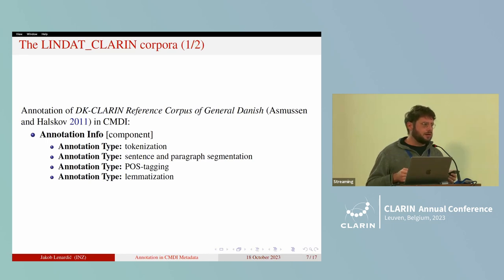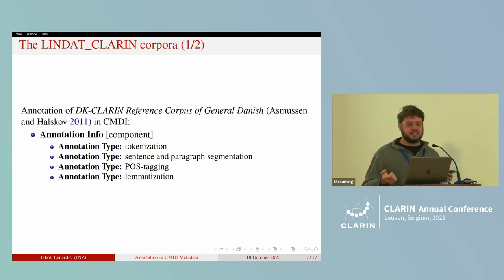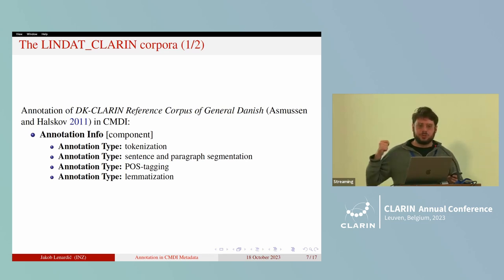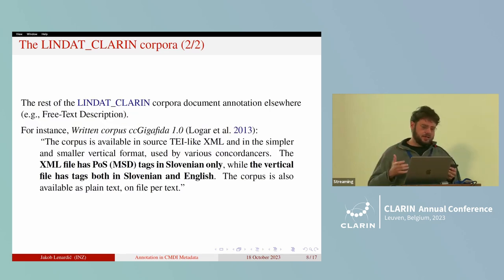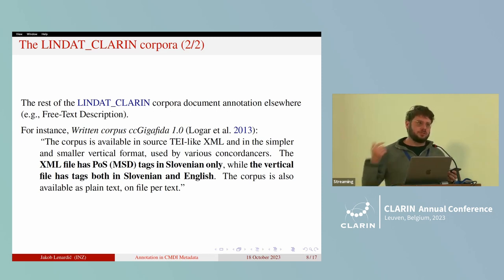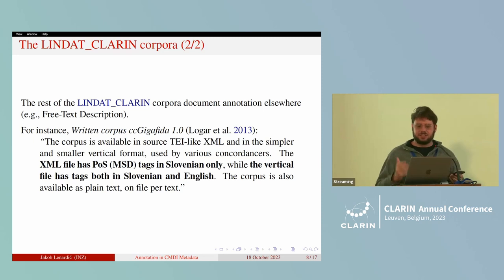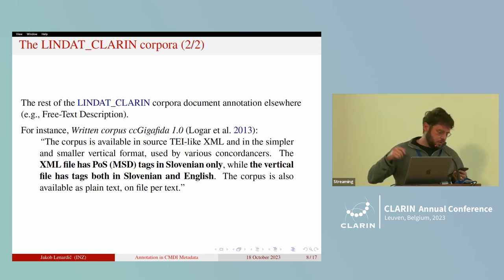Focusing on the Lindat-CLARIN corpora: there's only one corpus that makes use of this profile's annotation component, and this is the Danish reference corpus. This annotation component pertains to general annotation information, and the annotation element is used recursively to define all four annotation layers: tokenization, segmentation, part-of-speech tagging, and lemmatization. The rest of the Lindat-CLARIN corpora define annotation elsewhere. For example, the CC GigaFida corpus — the publicly available subpart of our Slovenian reference corpus — documents annotation as part of the free text description, stating that the XML file has morphosyntactic descriptions in Slovenian only, while the vertical file has tags both in English and Slovenian.